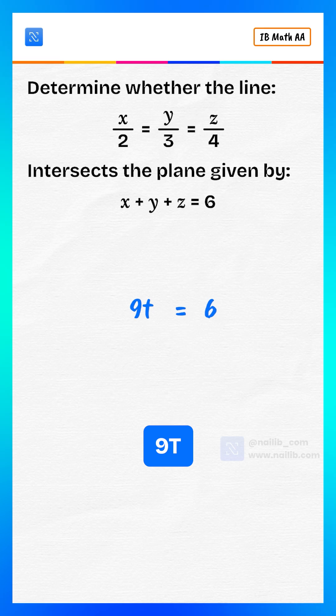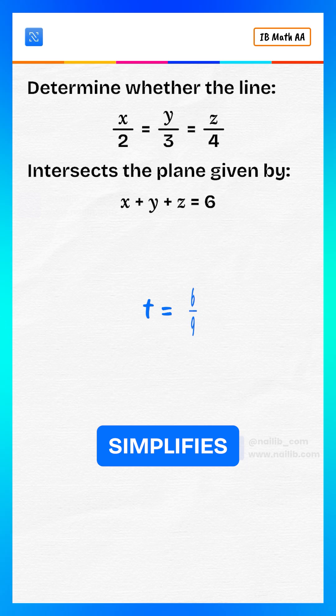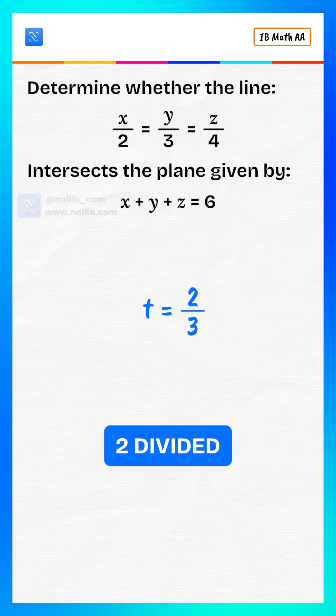Simplify. 9t equals 6. So, t is equal 6 divided by 9, which simplifies to t equals 2 divided by 3.